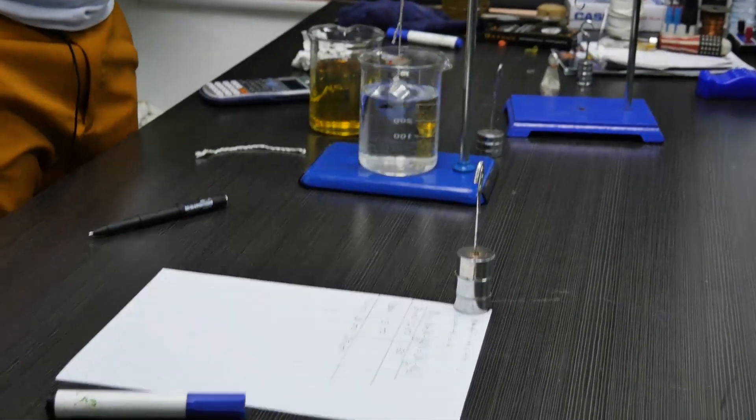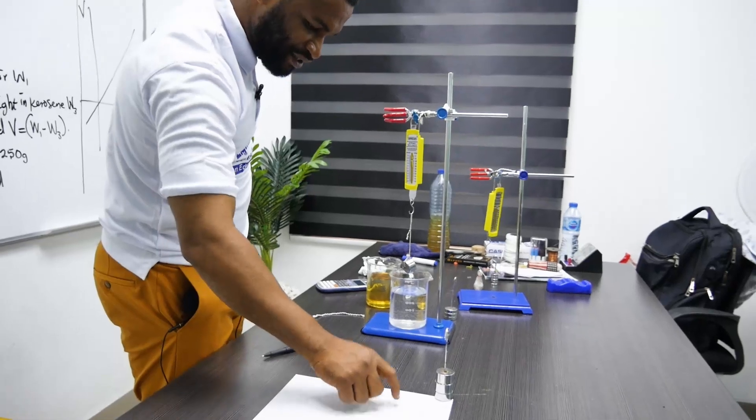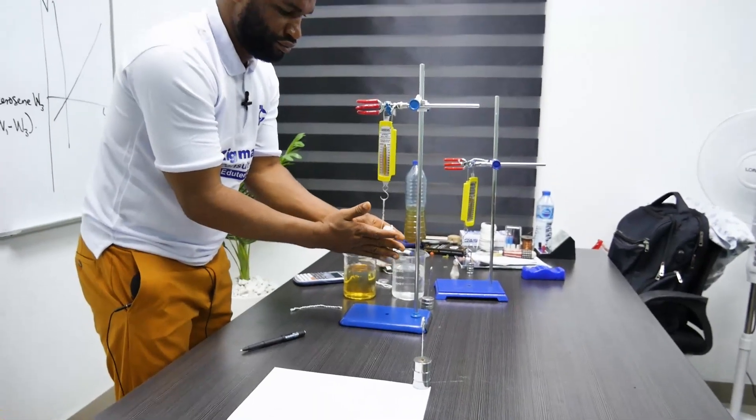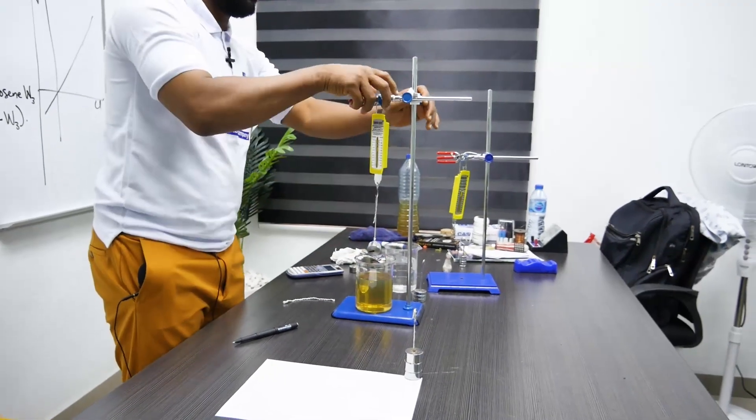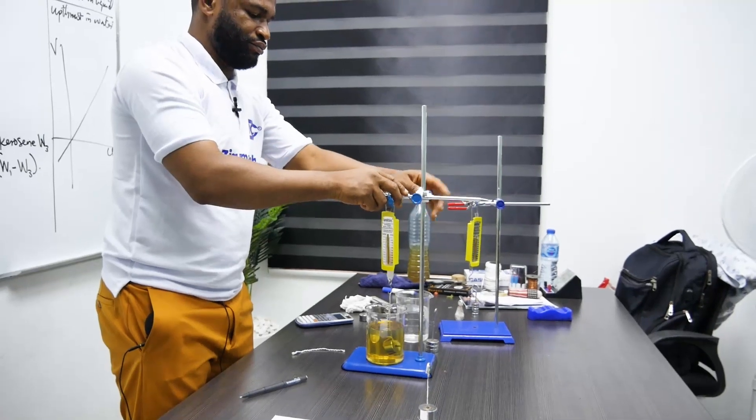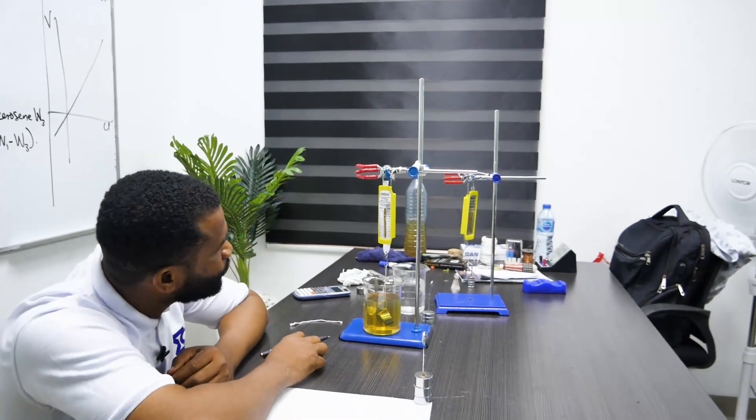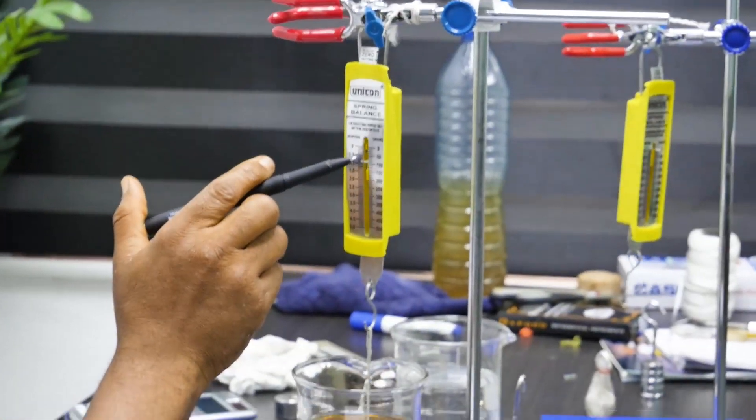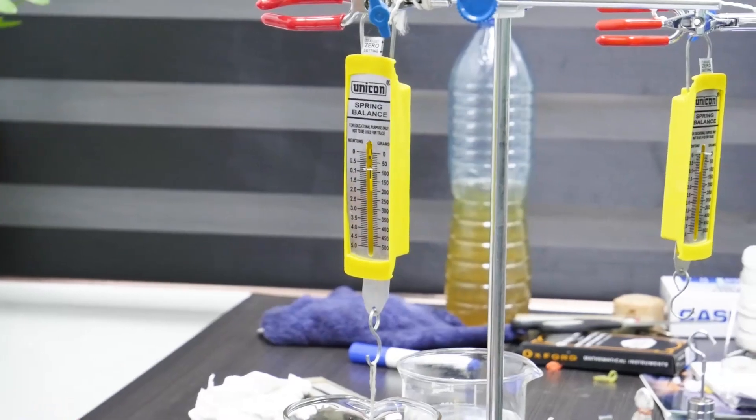I'm going to put it in kerosene as well to find what my value is. I am expecting that this value should be less than this value. This is 50, 60, 70, 80, 90. So 100 minus 90 is 10.